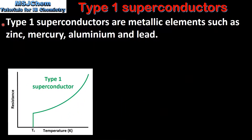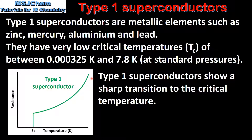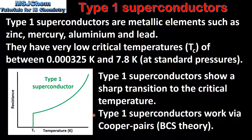Next we look at type 1 superconductors. Type 1 superconductors are metallic elements such as zinc, mercury, aluminium, and lead. Type 1 superconductors have very low critical temperatures of between 0.000325K and 7.8K. From this graph we can see that type 1 superconductors show a sharp transition to the critical temperature, shown by the vertical line on the graph. Finally, type 1 superconductors work via Cooper pairs, which is covered in more detail in the next video.